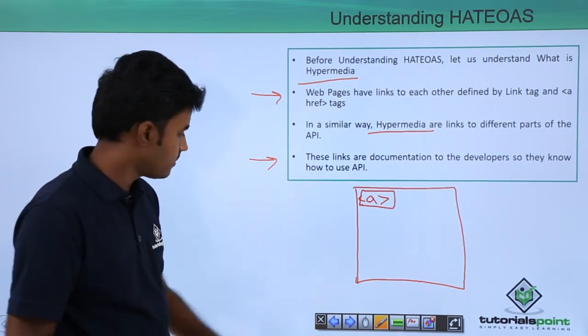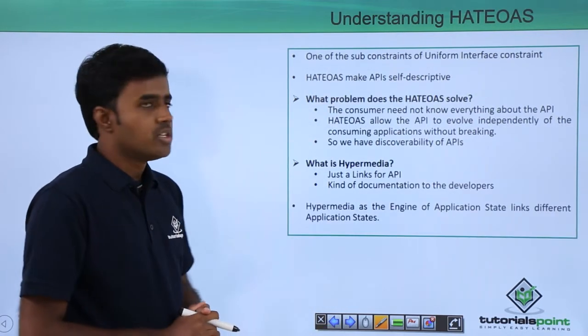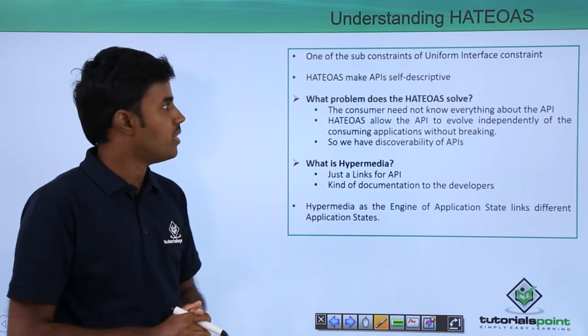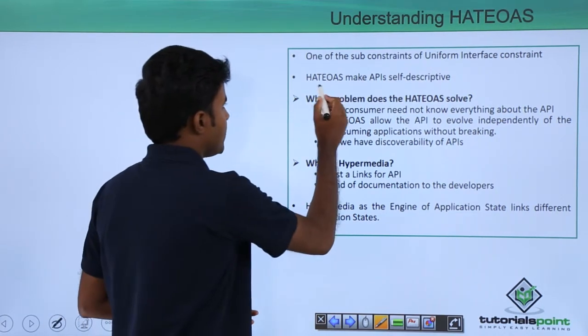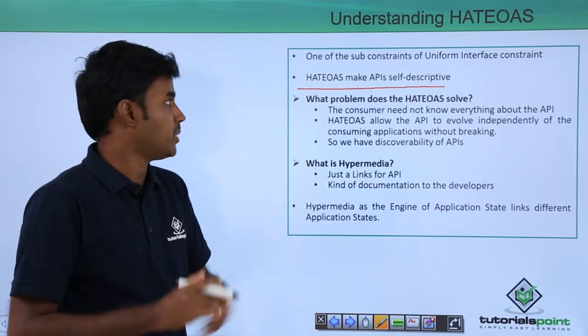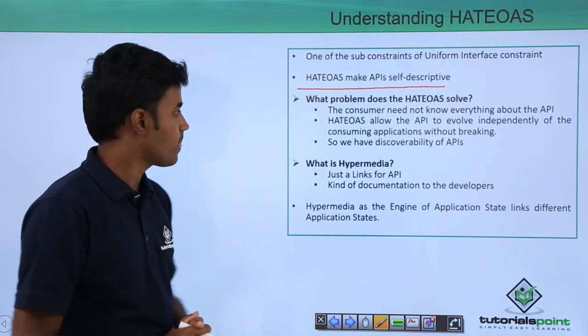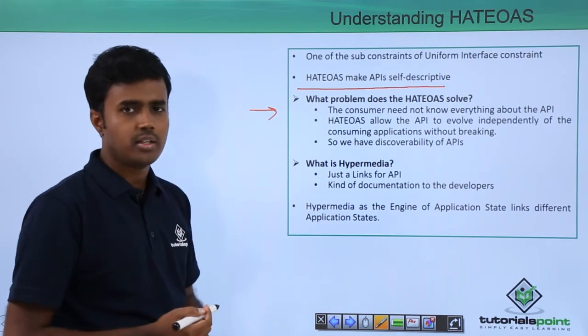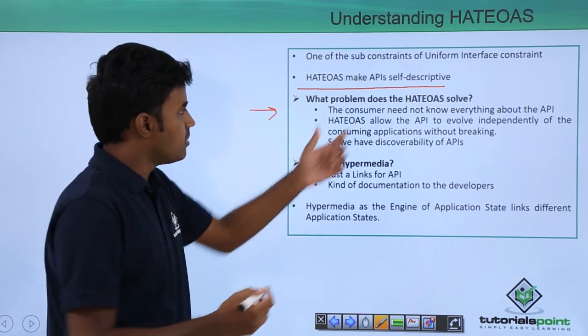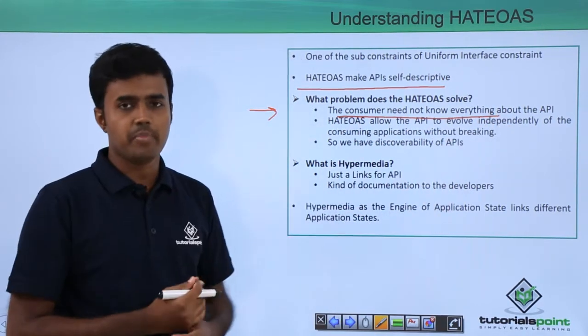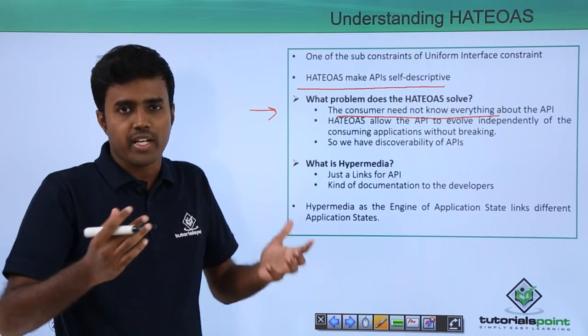HATEOAS is one of the constraints of uniform interface. HATEOAS makes APIs self-descriptive and self-discoverable. What problem are we trying to solve? The consumer or developer need not know everything about the API before using it.